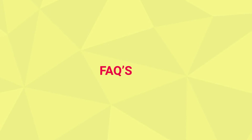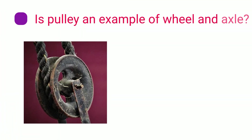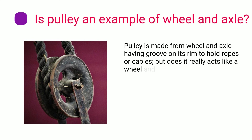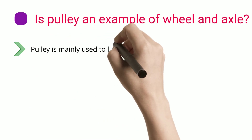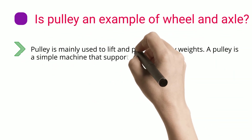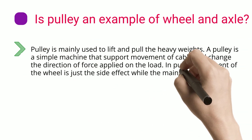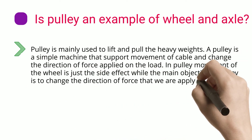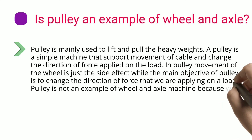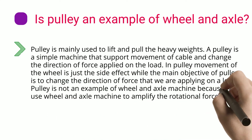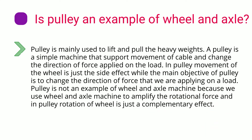FAQ: Is a pulley an example of wheel and axle? A pulley is made from a wheel and axle with a groove on its rim to hold ropes or cables, but does it really act like a wheel and axle machine? A pulley is mainly used to lift and pull heavy weights. It is a simple machine that supports movement of a cable and changes the direction of force applied on the load. In a pulley, movement of the wheel is just a side effect, while the main objective is to change the direction of force. Therefore, a pulley is not an example of a wheel and axle machine, because in wheel and axle machines we amplify rotational force, whereas in a pulley, rotation of the wheel is just a complementary effect.